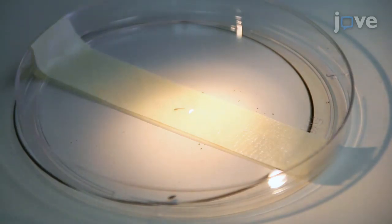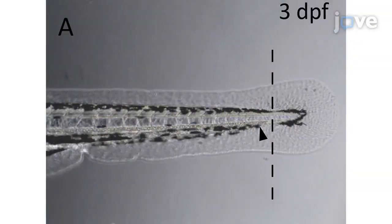To avoid bleeding and ensure survival of the larvae during fin clipping, the transection must occur precisely.